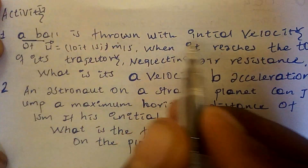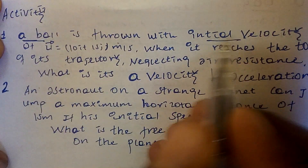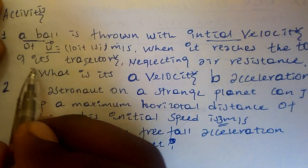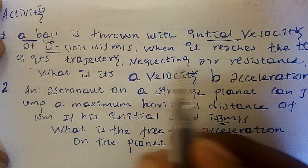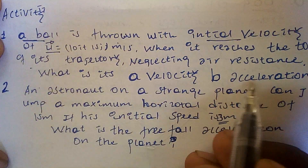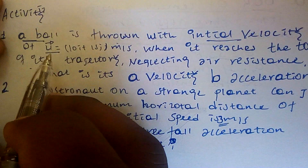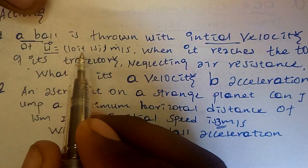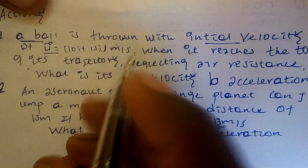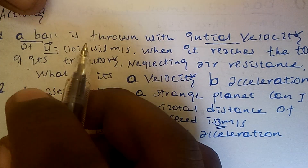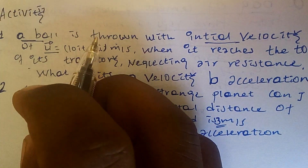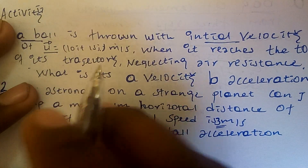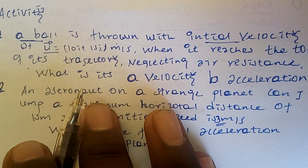A ball is thrown with initial velocity components. When it reaches the top of the trajectory, what is the velocity? The initial speed is 10 plus 10 — it is 10 m per second.